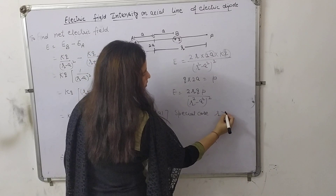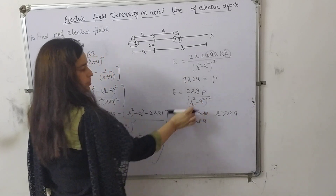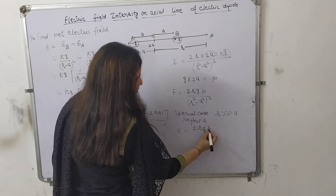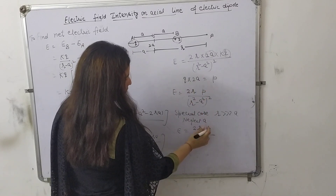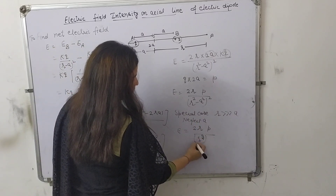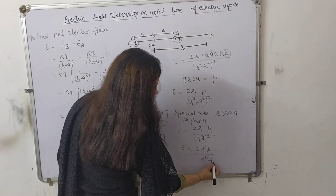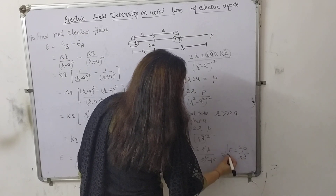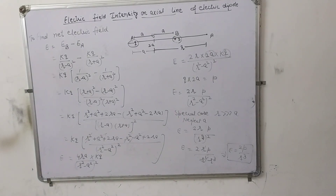For the special case where R is much greater than A, we neglect A in the denominator. Then E simplifies to E equals 2KP upon R cubed, which is the electric field on the axial line of a dipole for a distant point.